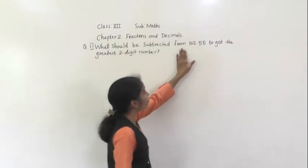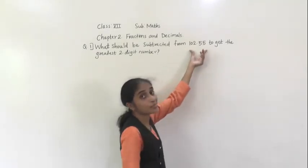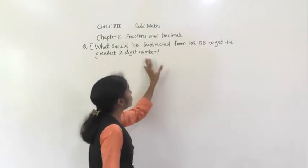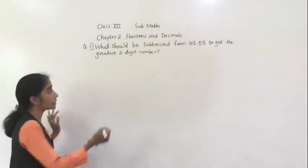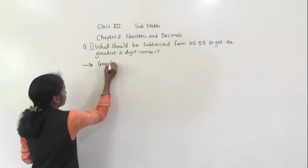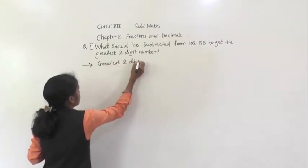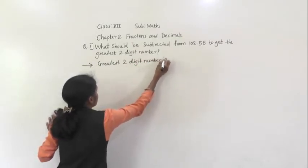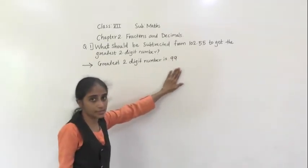From this number, which number we will subtract, then we will get the greatest two-digit number. First we should know which is the greatest two-digit number. 99 is the greatest two-digit number.